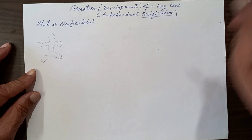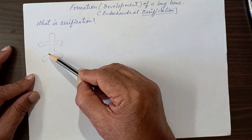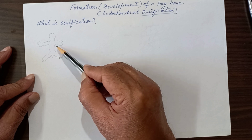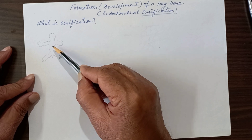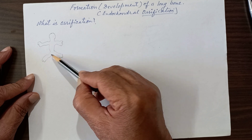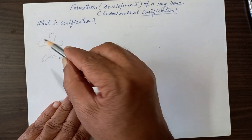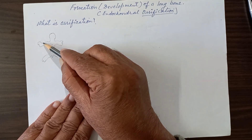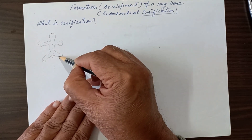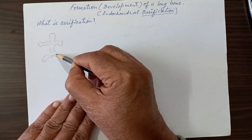I have drawn a rough diagram of a fetus — just a theoretical diagram showing the upper limbs and the lower limbs where the long bones are going to form. The skin of a fetus or embryo is formed by the ectoderm, out of the three germinal layers.